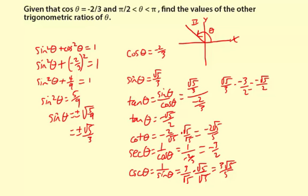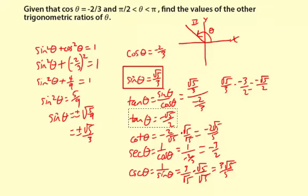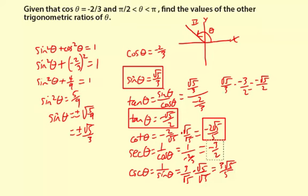So we found: sine of theta is square root of five over three; tangent of theta is negative square root of five over two; cotangent of theta is negative two square root of five over five; secant of theta is negative three over two; cosecant of theta is three square root of five over five.